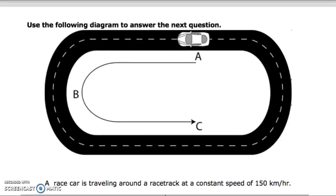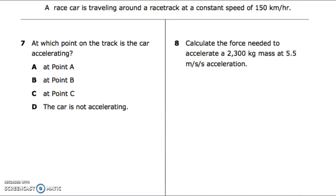Use the following diagram to answer the next question. A race car is traveling around a race track at a constant speed of 150 kilometers per hour. Number seven: at which point on the track is the car accelerating? A: at point A. B: at point B. C: at point C. D: the car is not accelerating.